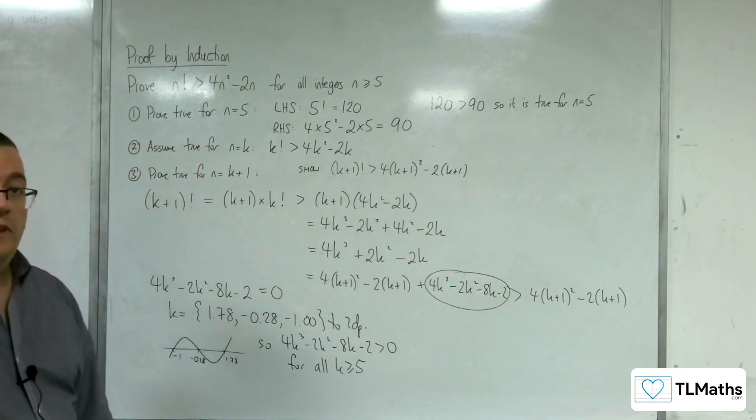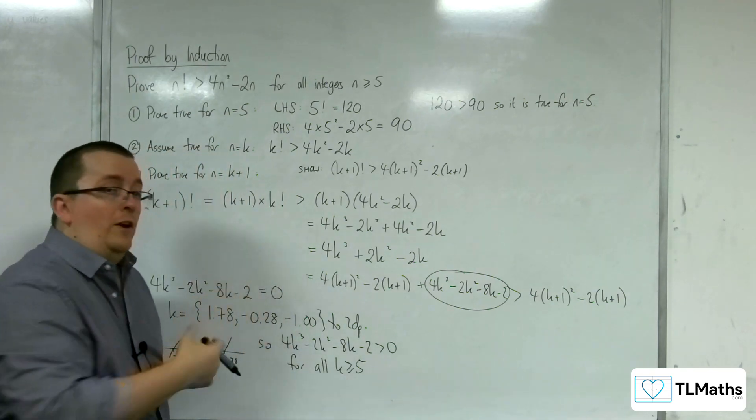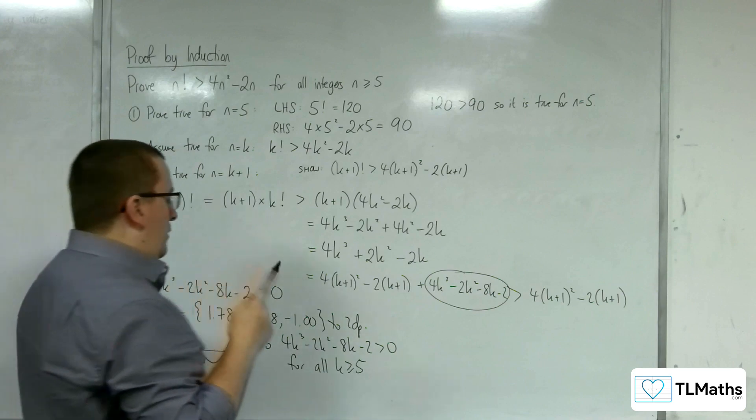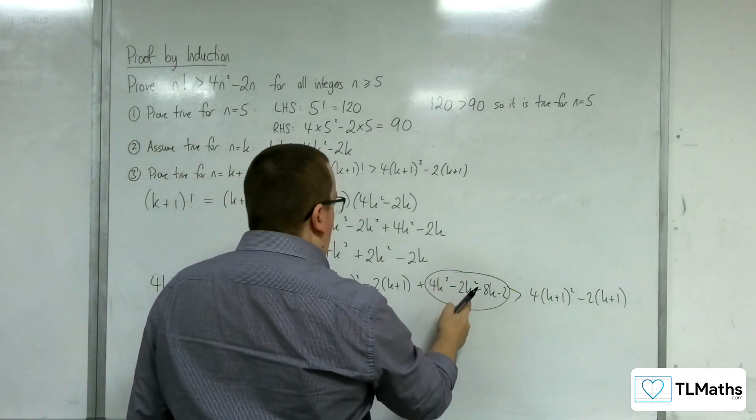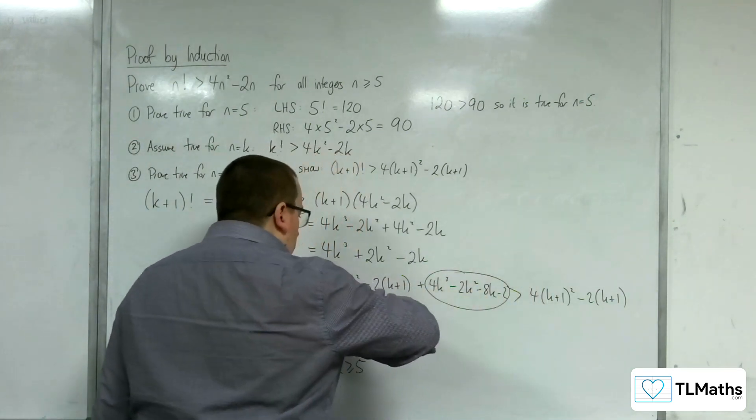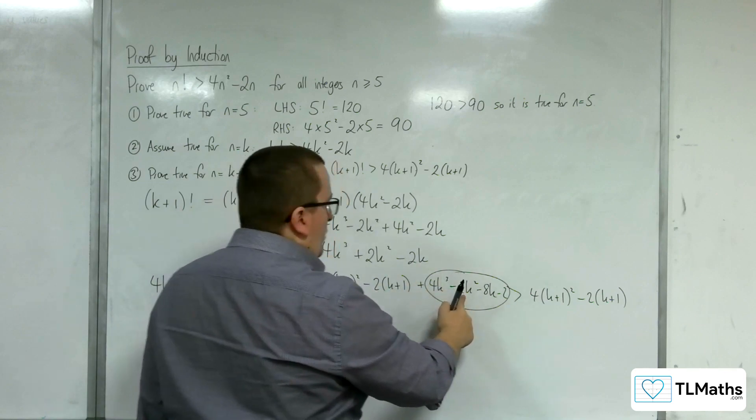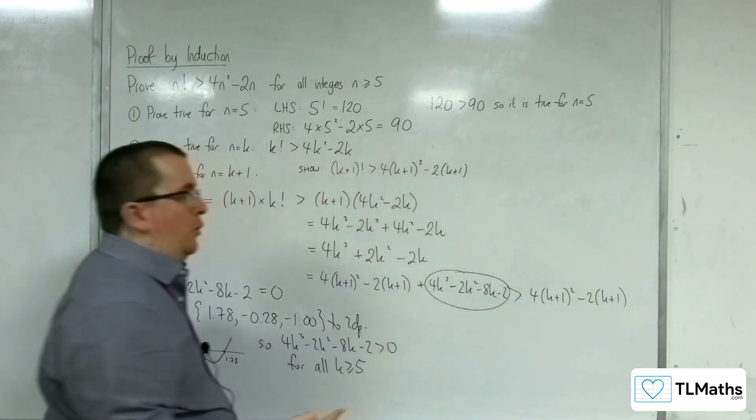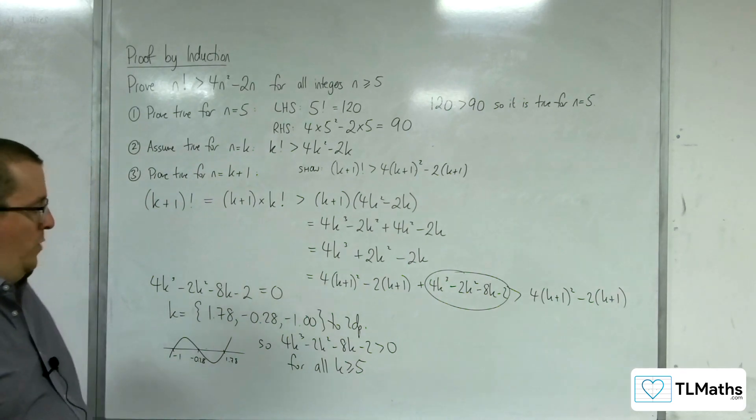And so this is greater than 0, and we've got that plus something that's greater than 0 must be greater than that. And so it is proved. OK, and we are done.